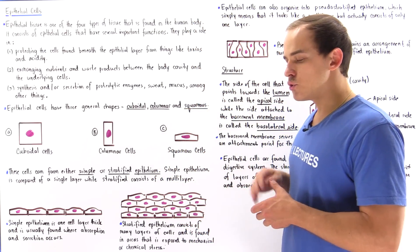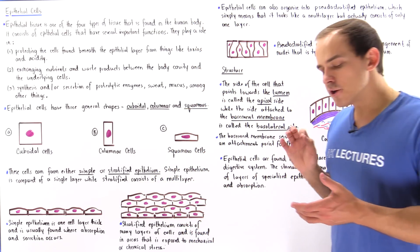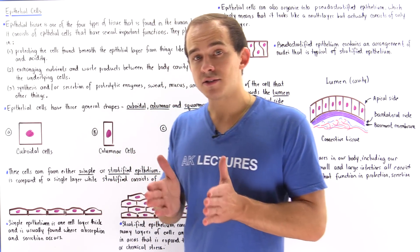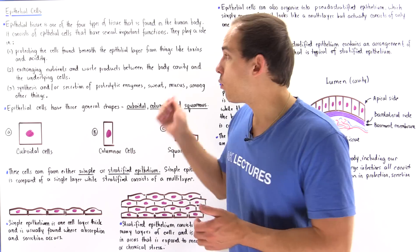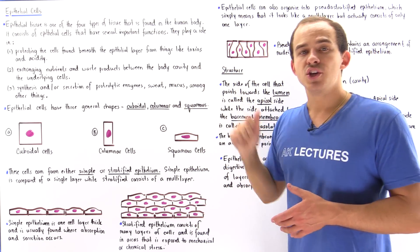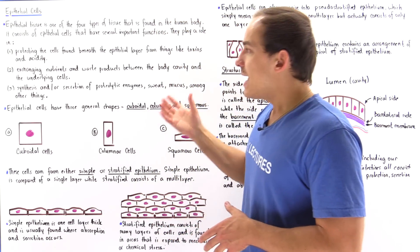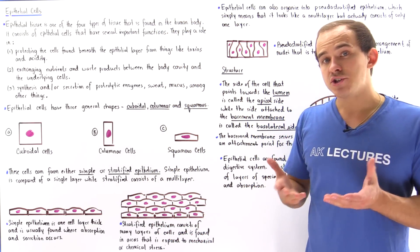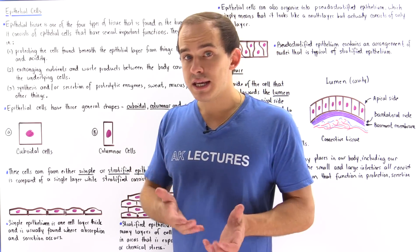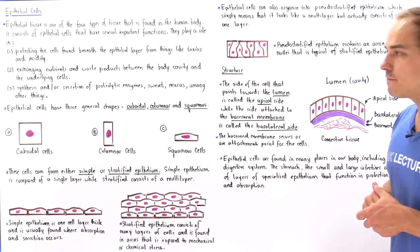The epithelial tissue has three important functions. Firstly, it functions in protection — it protects the cells found underneath our epithelial layer from things like toxins, UV radiation, acidity, and many other things. It also acts to exchange nutrients and waste products between the cells found beneath our epithelial layer and our body cavity.